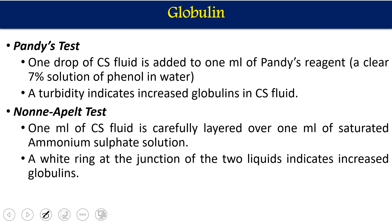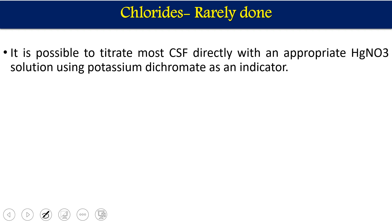Total globulins are estimated by two methods: the Pandy test and the Nonne-Apelt test. In the Pandy test, one drop of CSF is added to 1 ml of Pandy reagent — a clear 7% solution of phenol in water. Turbidity in the presence of this reagent indicates globulin in the CSF. In the Nonne-Apelt test, 1 ml of CSF is carefully layered over 1 ml of saturated ammonium sulfate solution — a white ring at the junction of the two liquids indicates increased globulin.